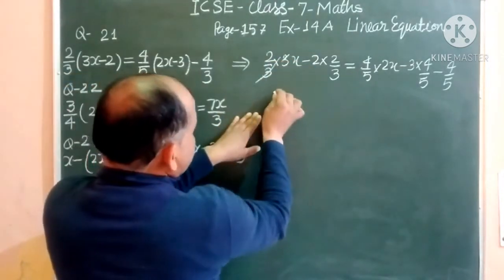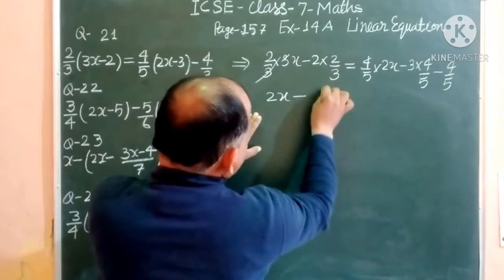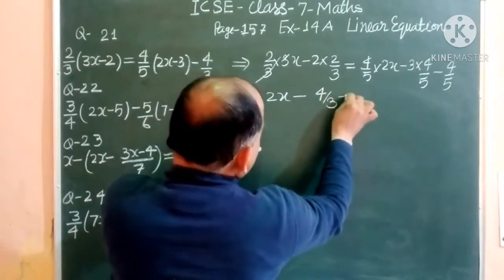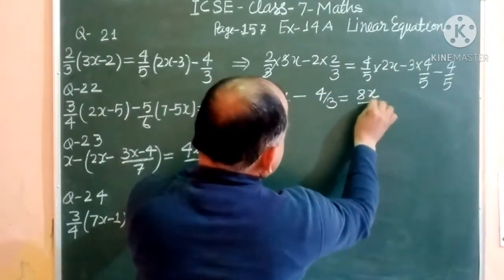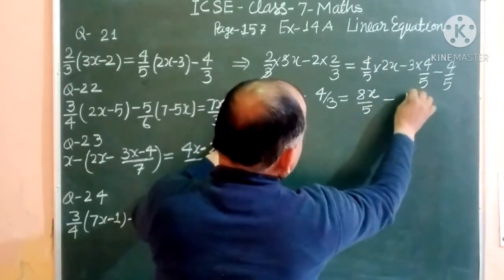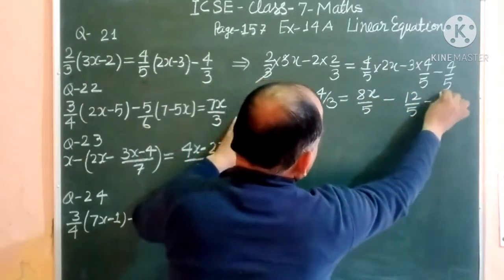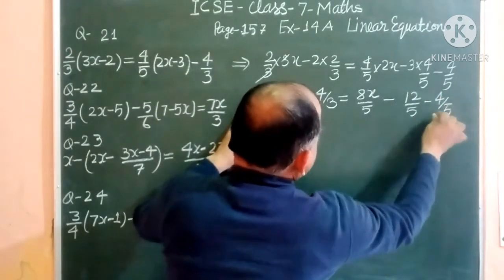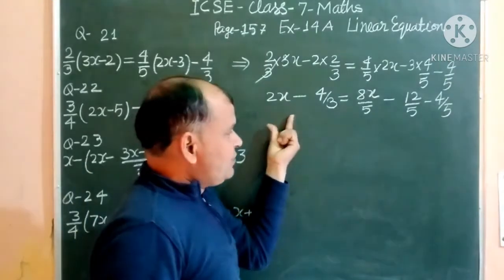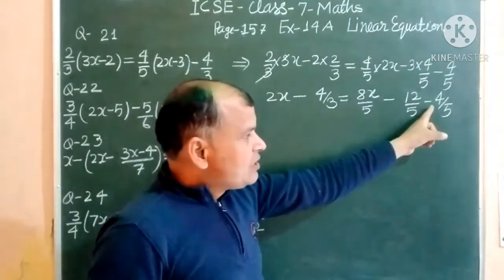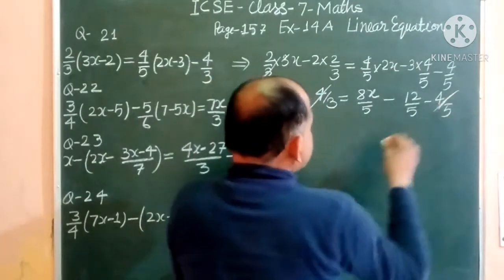Simplifying we get: 2x - 4/3 = 8x/5 - 12/5 - 4/3. Notice that -4/3 appears on both the left side and the right side, so they cancel each other.